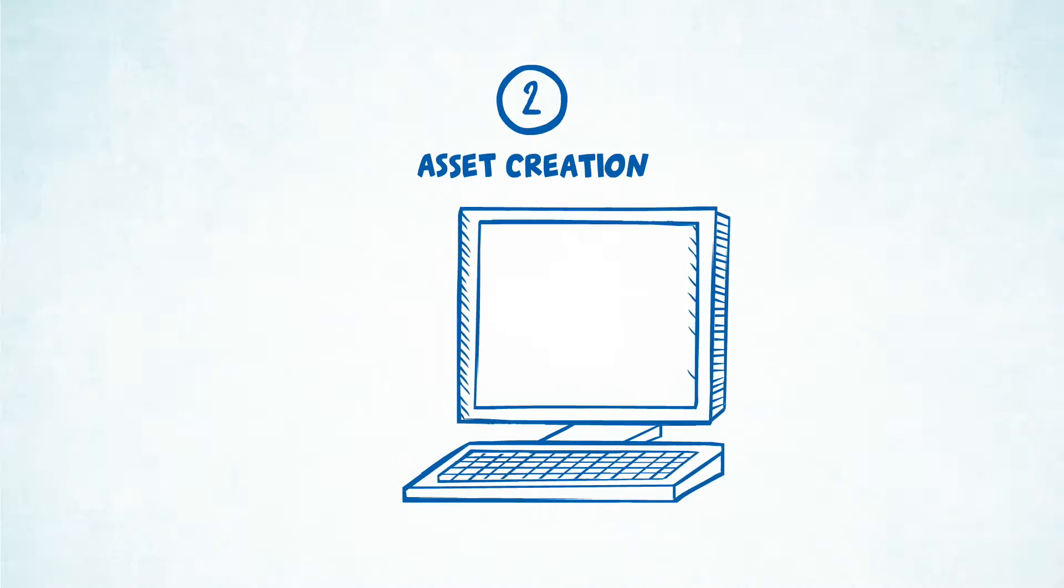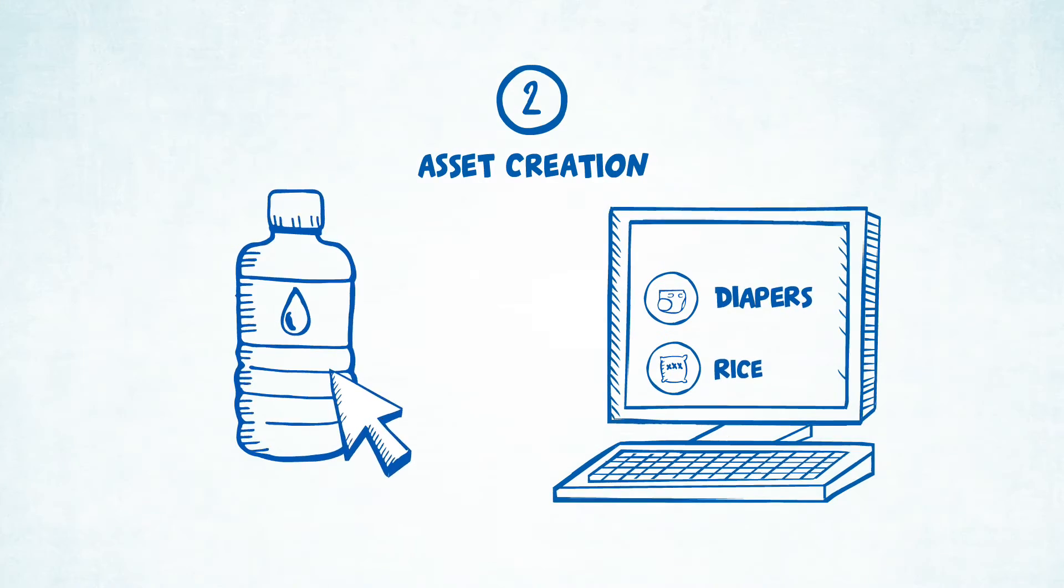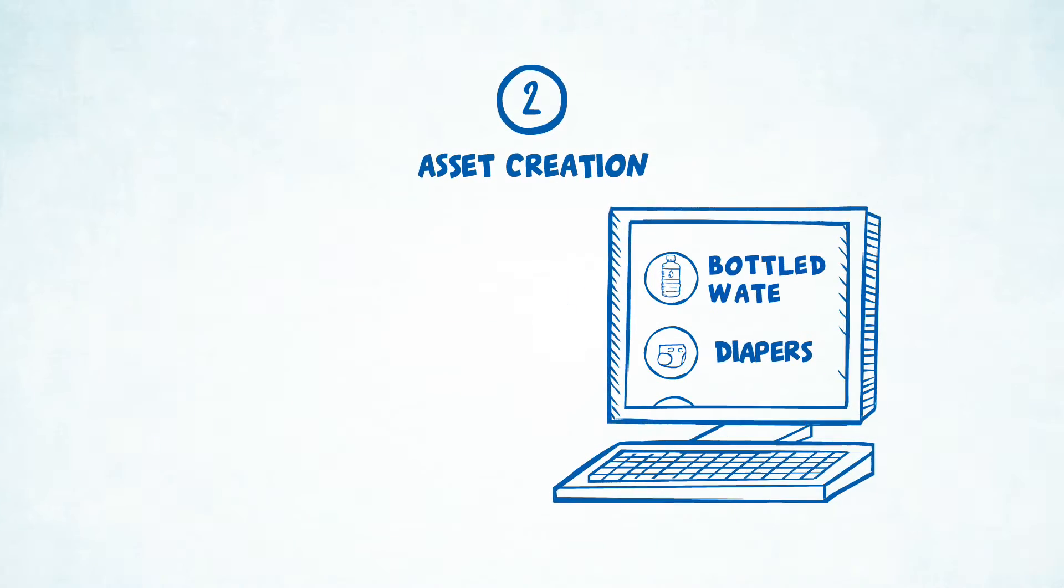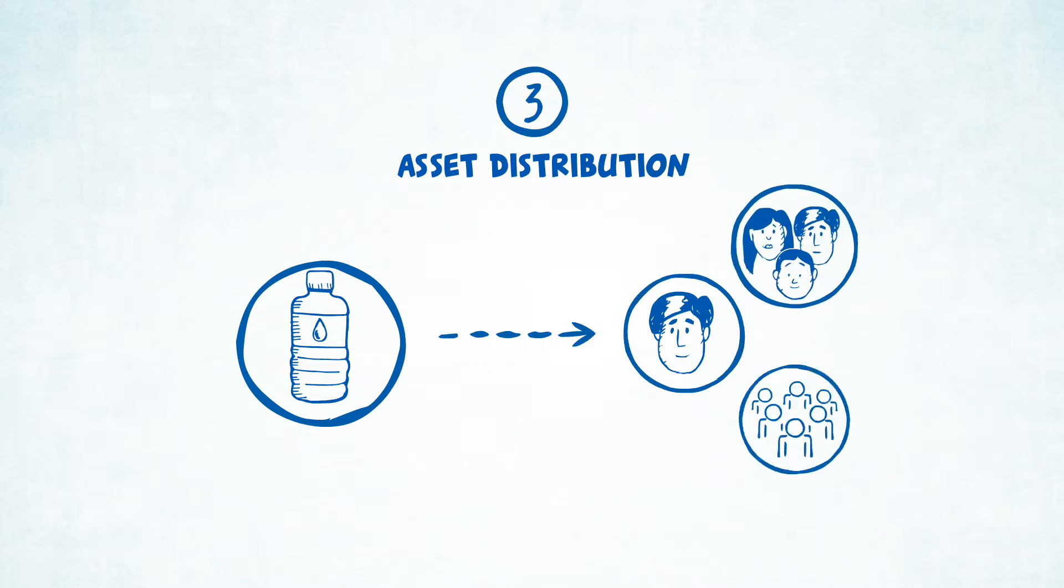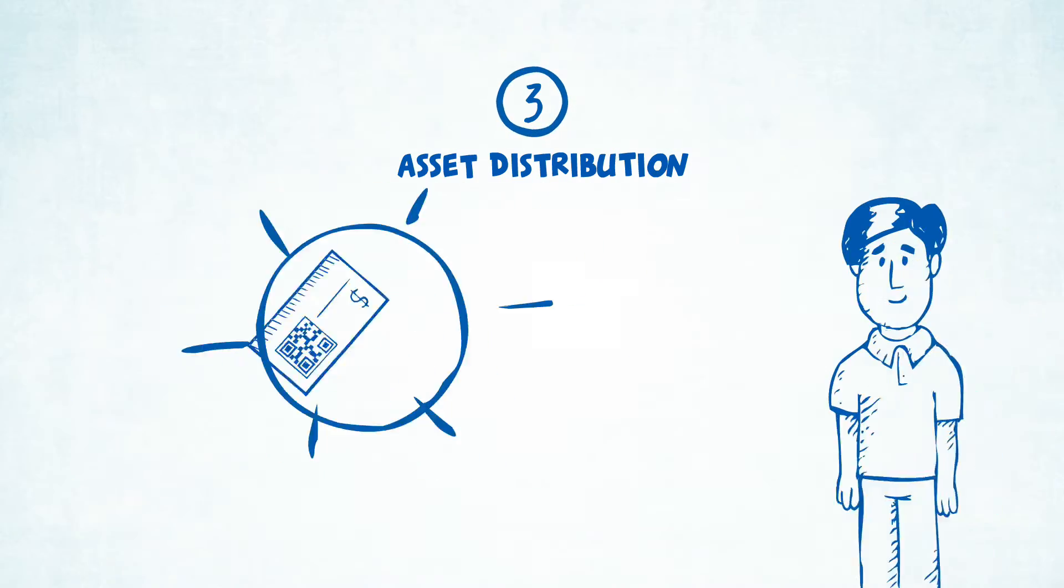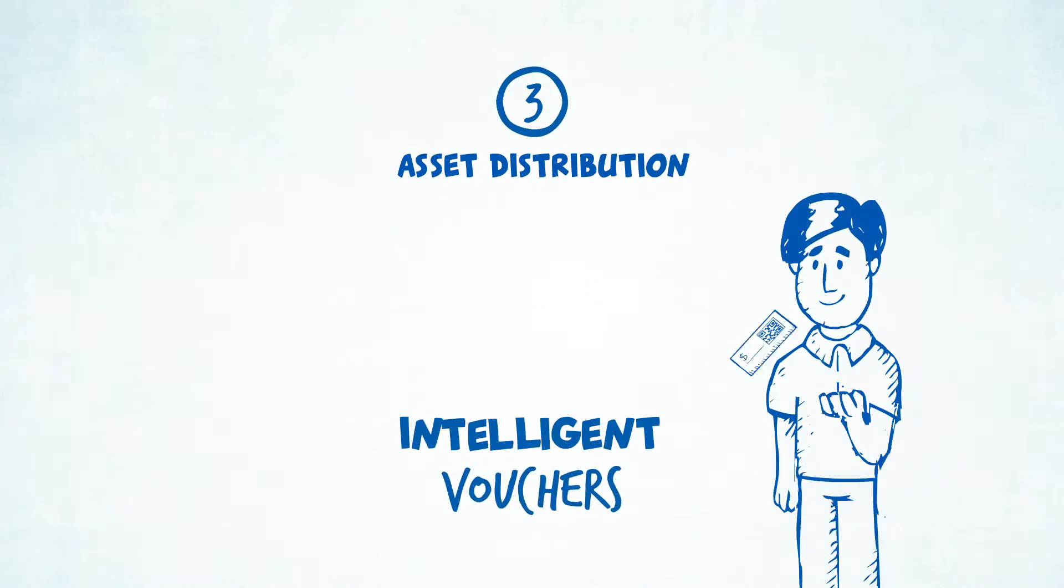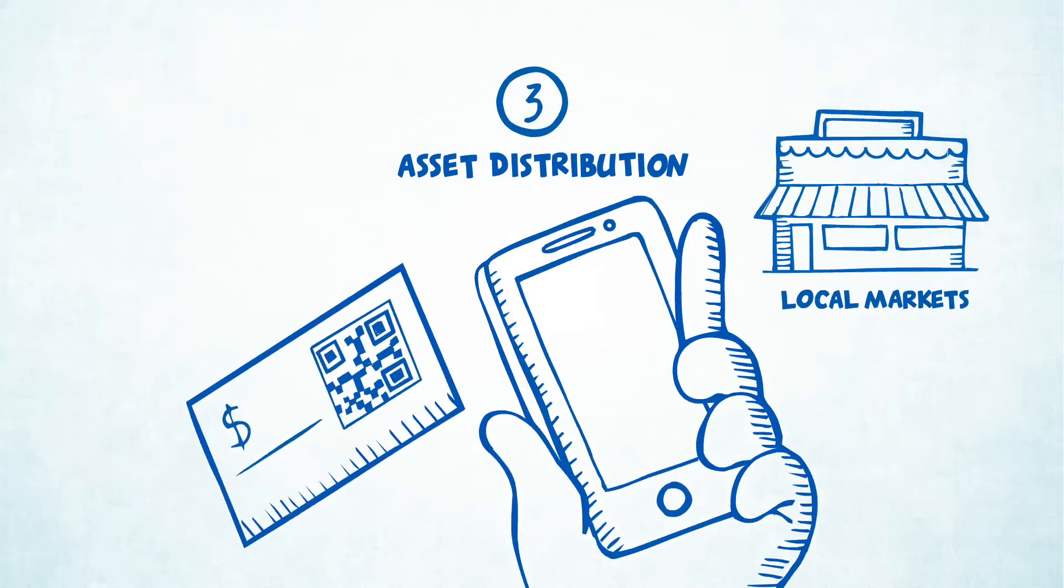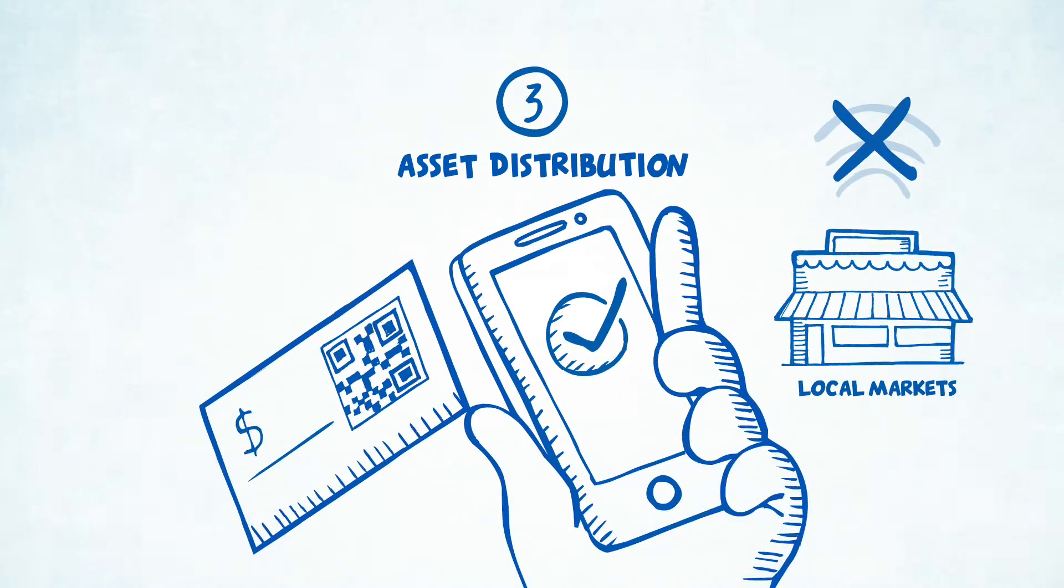Then, assets that represent entitlements are quickly created. These assets can then be easily distributed to individuals, families or groups using our intelligent vouchers. Beneficiaries can obtain products and services that they are entitled, even in offline environments.